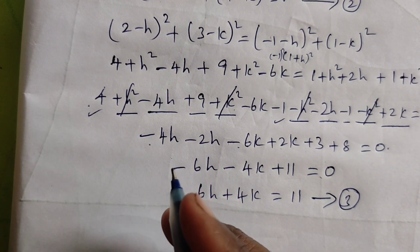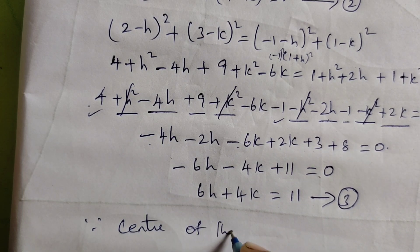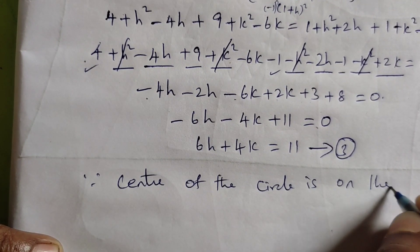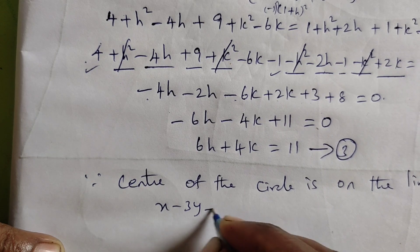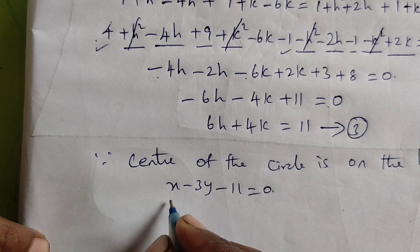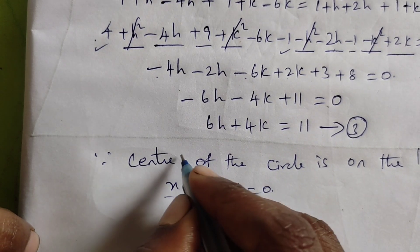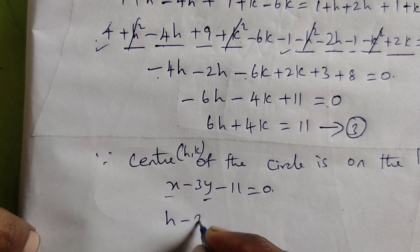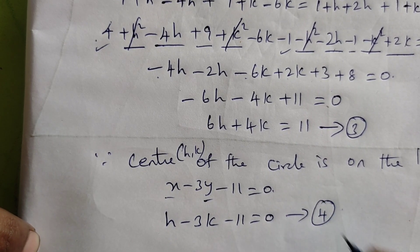Since the center of the circle lies on the line x minus 3y minus 11 equals 0, we substitute x = h and y = k, because the center is (h, k). This gives: h minus 3k minus 11 equals 0. Let this be equation 4.